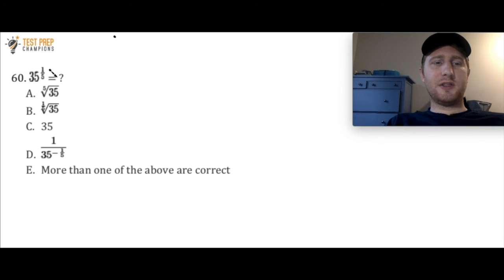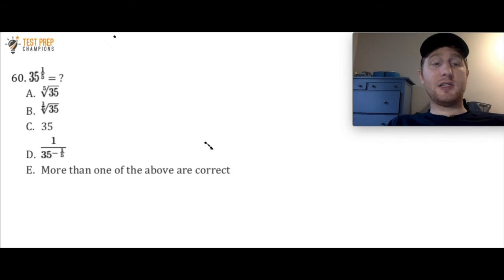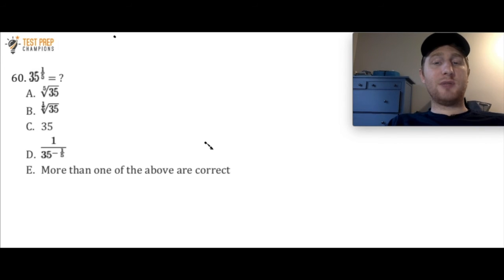35 raised to the 1/5 equals what? Is it A — the 5th root of 35? B — (1/5)√35? C — 35? Or D — 1 over 35 raised to the negative 1/5? Pause the video, try your best with this question, and then when you're ready, we'll go over how to do it.